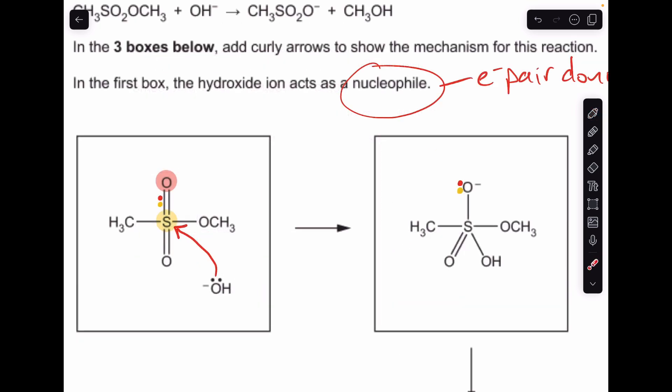I've added some colors to help me explain the next curly arrow. You'll notice I've highlighted the sulfur as yellow, the oxygen as red. We've got a yellow dot and a red dot. They represent the pair of electrons in this half of the SO double bond.